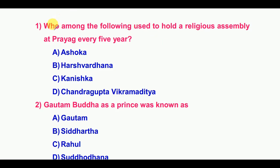The first question: Who among the following used to hold a religious assembly at Prayag every 5 years? The answer is option B: Harshavardhana.